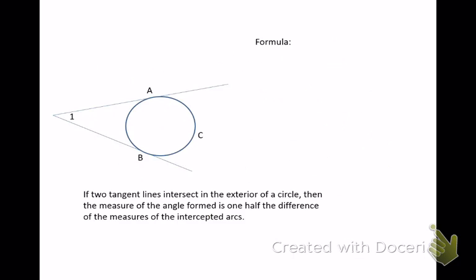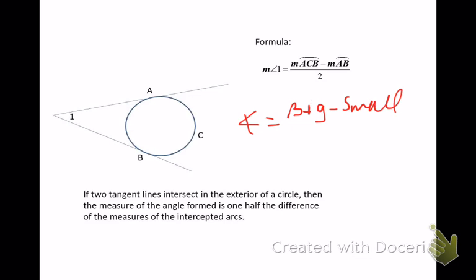The next theorem involves two tangents. When two tangents cross, the vertex will be outside the circle, and so we're still going to use big minus small divided by 2.